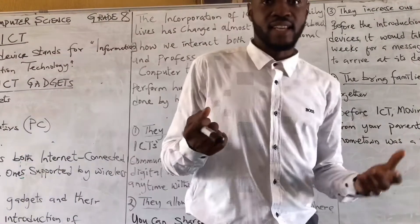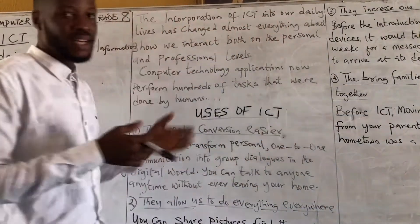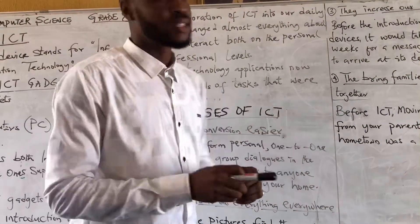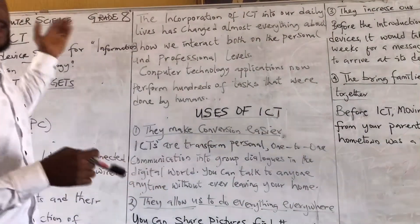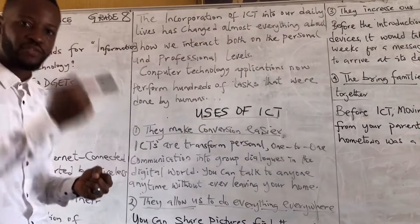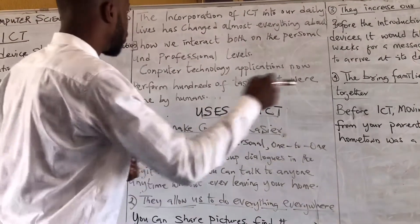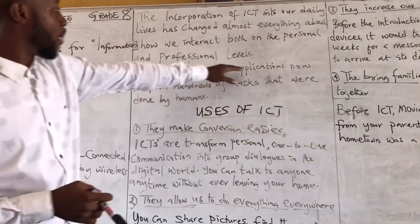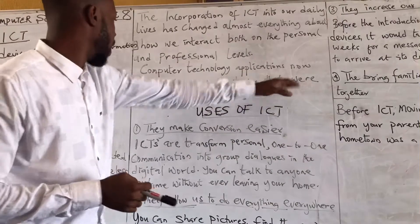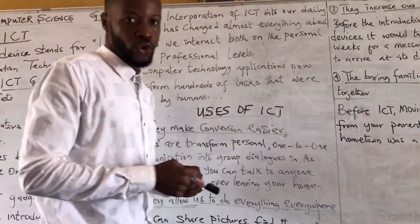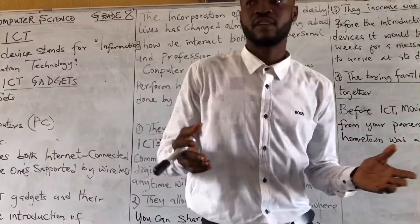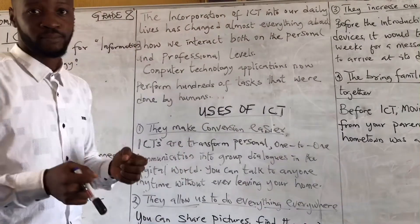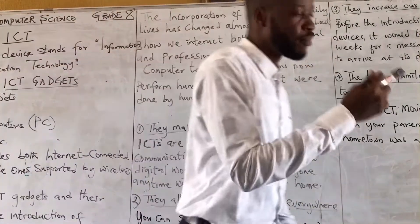ICT has changed our daily lives — the way we communicate and interact with others. With ICT, we get information as fast as possible and can communicate with others. Computer technology applications now perform hundreds of tasks that were previously done by humans. Virtually everything we have is being controlled by ICT.